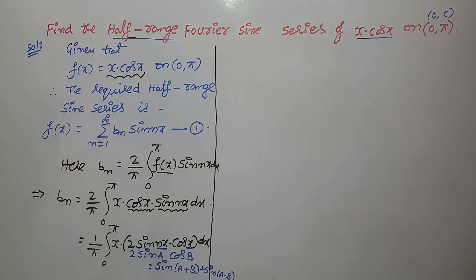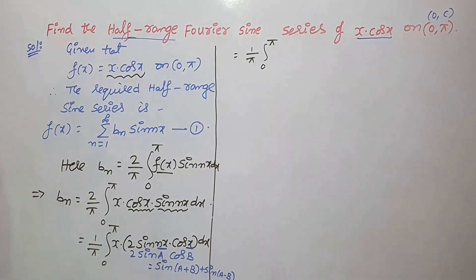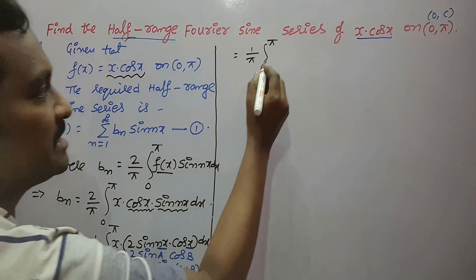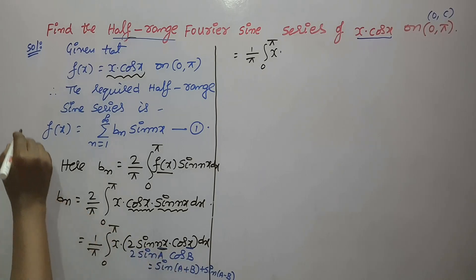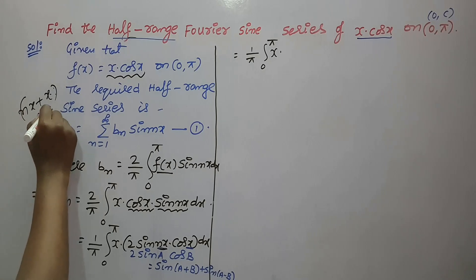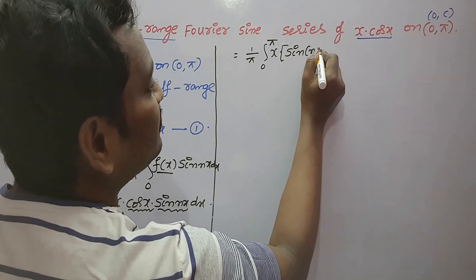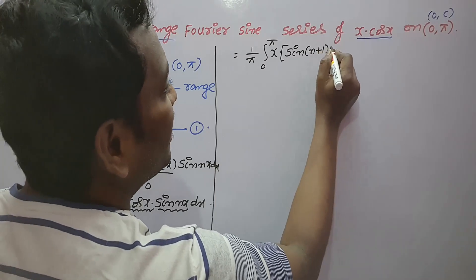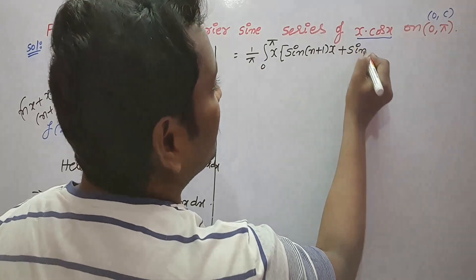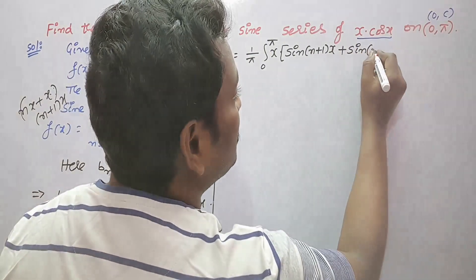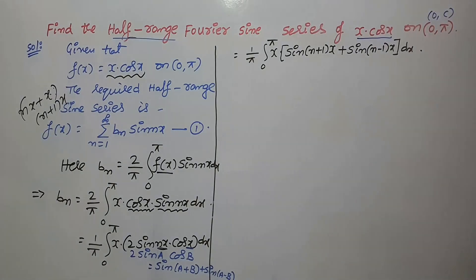According to this formula we change the trigonometric term, and we get (1/π) · integral from 0 to π of x · [sin(nx + x) + sin(nx − x)] dx. Taking x as common: sin((n+1)x) + sin((n−1)x), times dx.